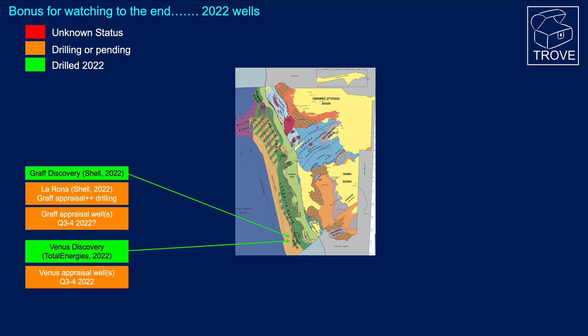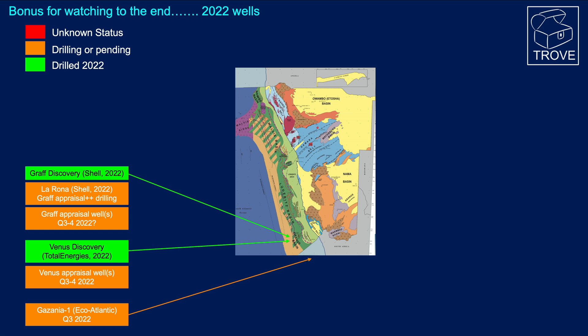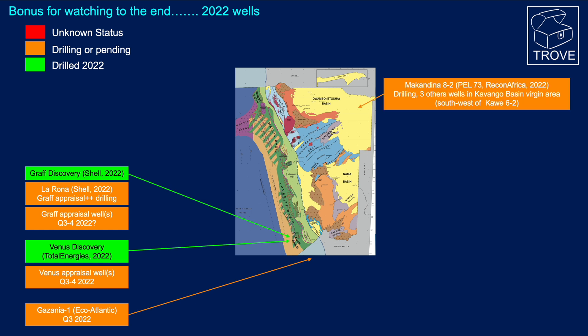Likewise, for TotalEnergies, later in the year there will be a round of appraisal drilling, with the first well expected to spud in August. Gazania — that's in the third quarter; that's Eco-Atlantic, actually down in South Africa but just an extension of the Orange Basin — a very interesting well we'll cover in follow-up videos. Makandin 8-2 has spudded; this is Recon Africa drilling onshore in the Kavango Basin, not far from the Kawi 6-2 well which had a lot of shows. There are going to be three other wells in this region.